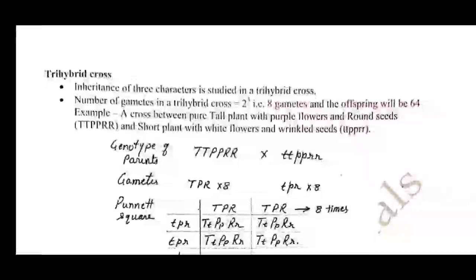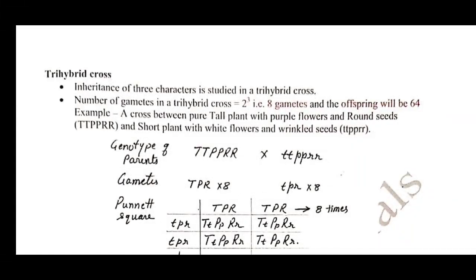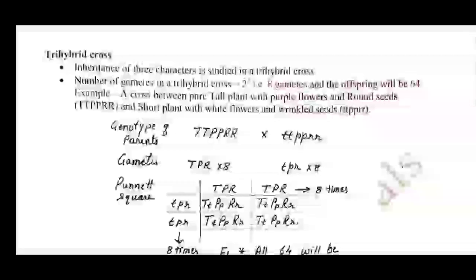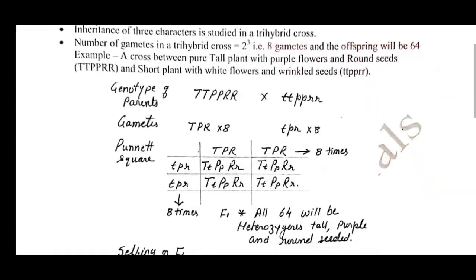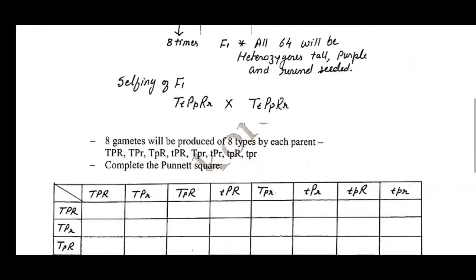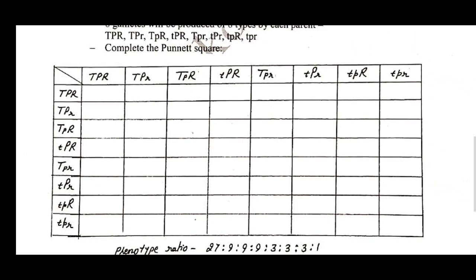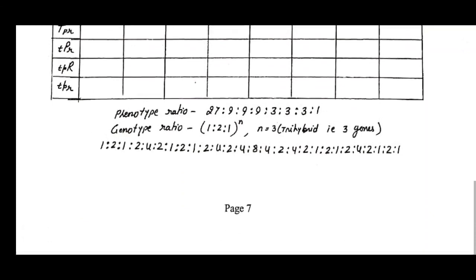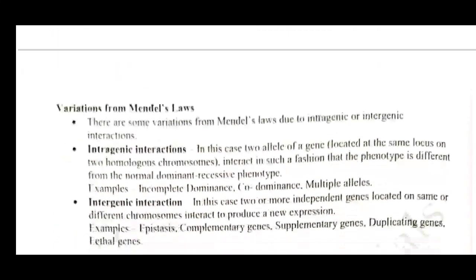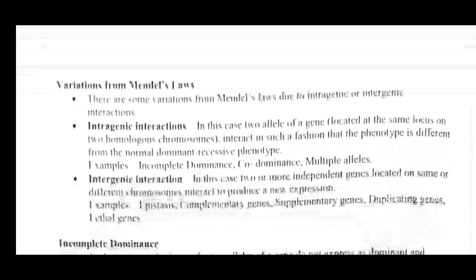On page number seven we have Trihybrid Cross, which is an extra topic for board examinations or NEET, but ma'am has included it for comprehensive knowledge of genetics. The trihybrid cross is somewhat tough, which is why the Punnett square table is not completed here, and the ratio obtained is also somewhat bigger than expected.